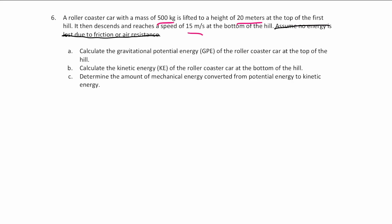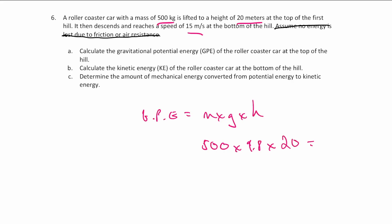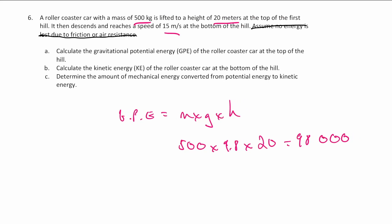For part A, we calculate the gravitational potential energy. The equation is GPE equals mass times gravitational field strength times height. Taking the bottom of the hill as our zero point, we plug in: 500 kilograms times 9.8 times 20 meters. Put that into your calculator and you get 98,000 joules of gravitational potential energy at the top of the hill.